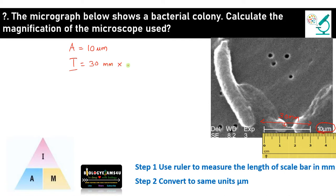So we need to convert it into micrometer by multiplying it with 1000. So it will be 30,000 micrometers. So we need to find out the magnification. Magnification, we can calculate magnification by image size by actual size. Image size by actual size as per the triangle.